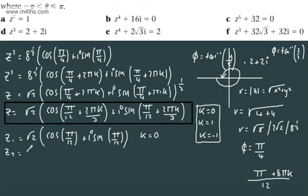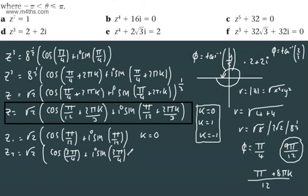z2 is going to be now root 2. We're going to take k equal to 1. If I put k equal to 1, I've got π plus 8π, which is going to be 9π by 12. And you might want to show this in your workings. 9π by 12 is going to give us 3π by 4. So we get cos of 3π by 4 plus i sin of 3π by 4. So that is when k is equal to 1.